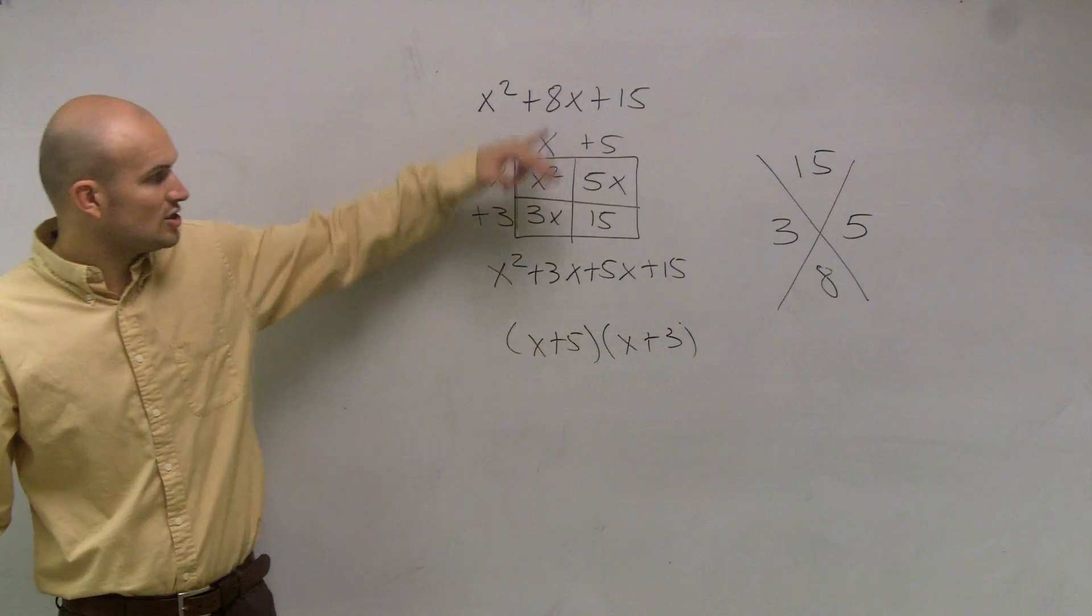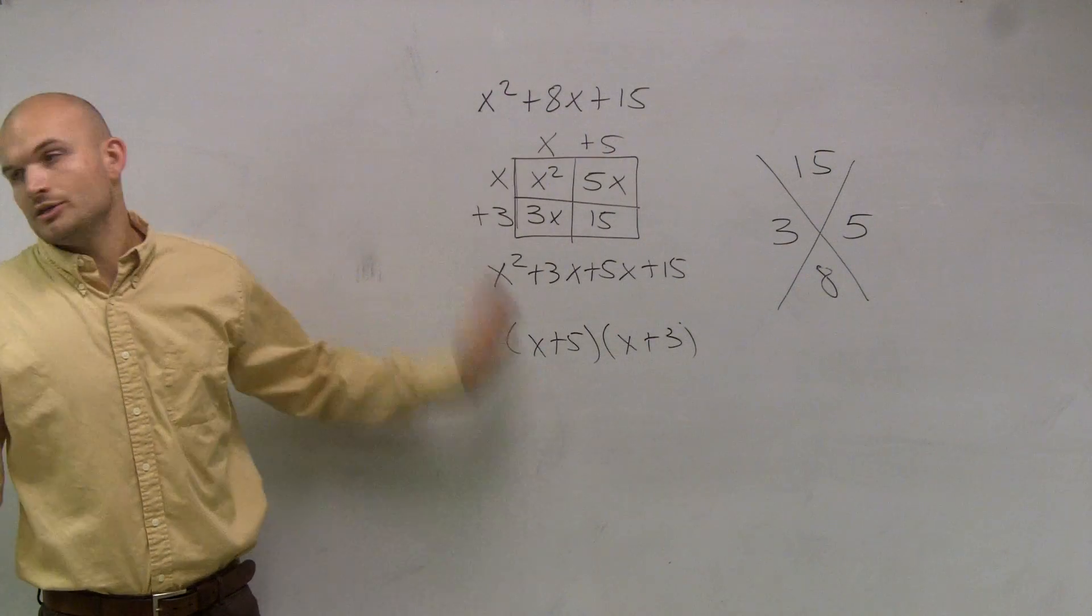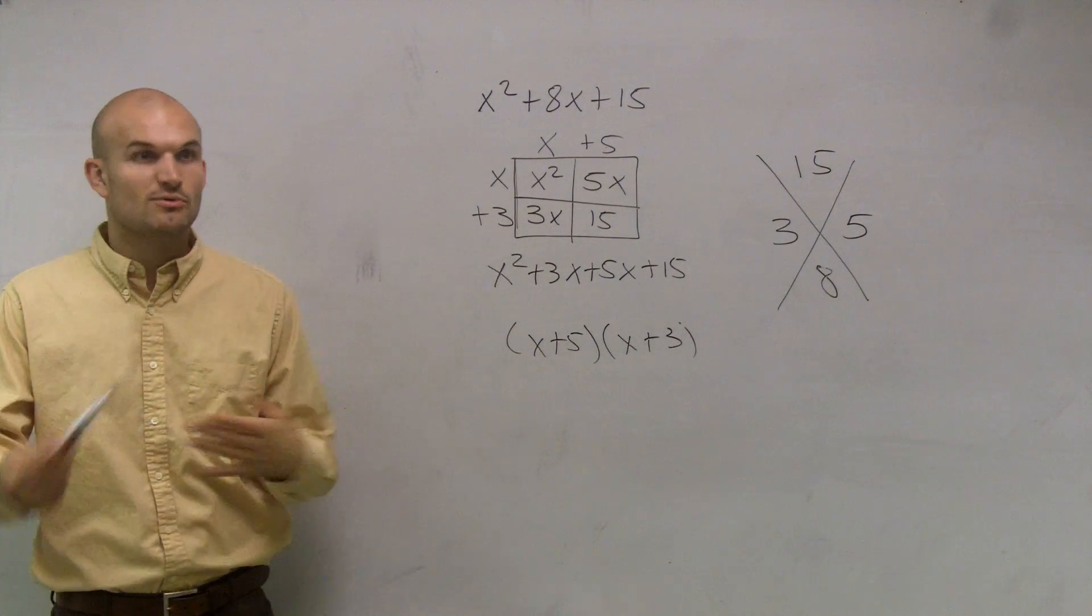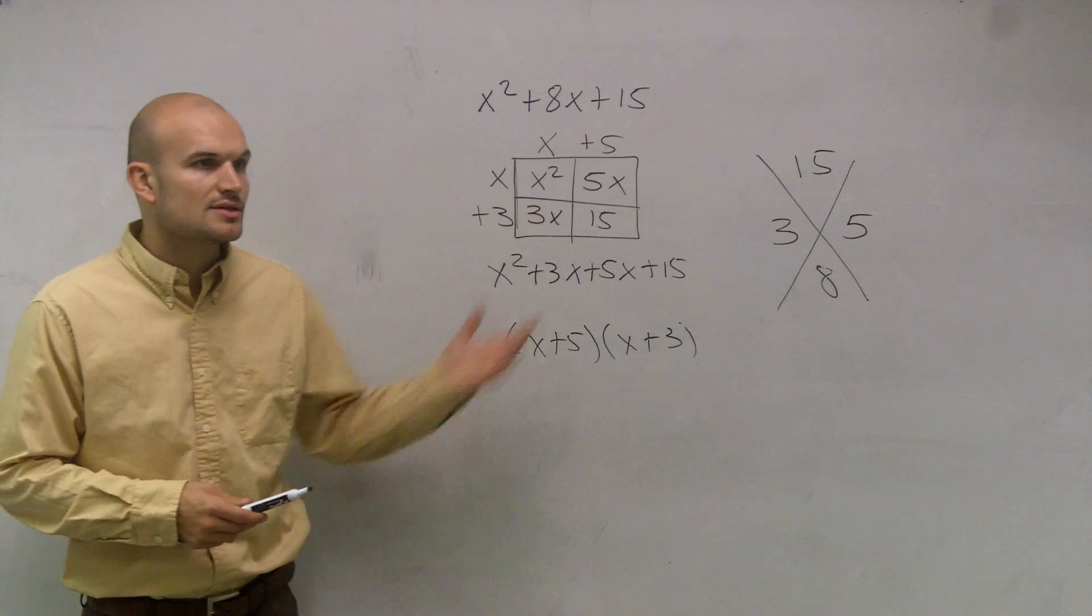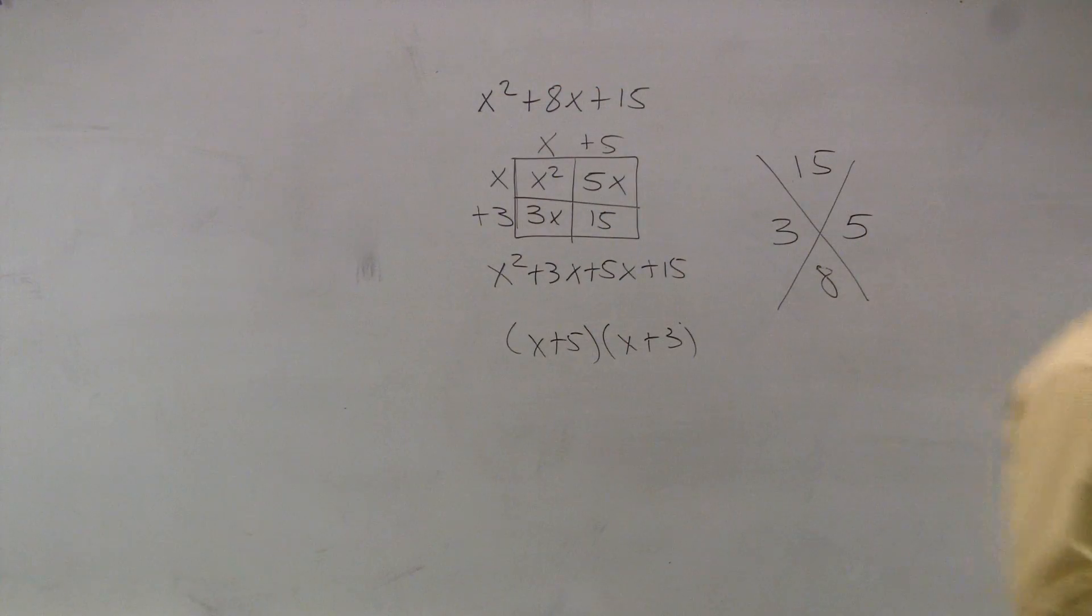And does this times this multiply to give you that? And when you check by FOIL, distributed property, whatever you want to do, it does. So that is a way you can FOIL it out. All right? What was the point of that?